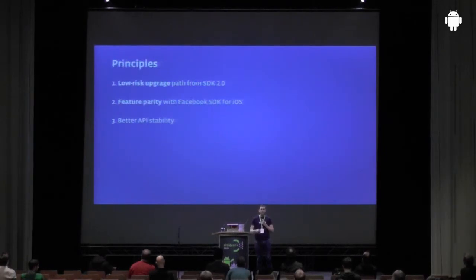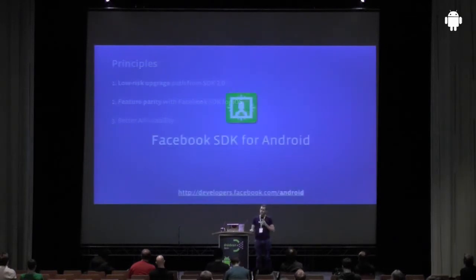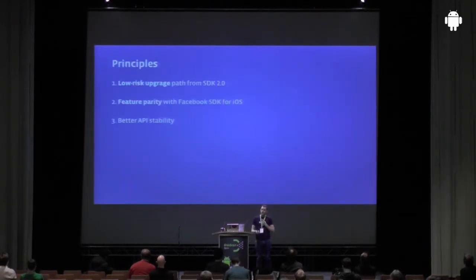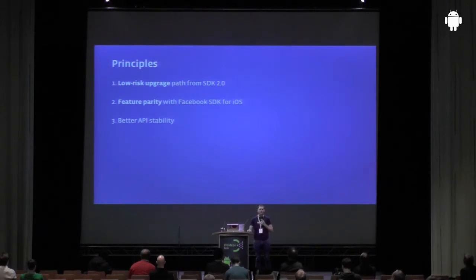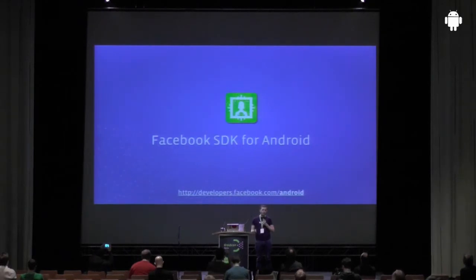They had a couple of key principles they didn't want to move away from. They wanted to make sure the upgrade path was fairly low risk for developers from version 2. They wanted feature parity with the iOS SDK which had been upgraded to version 3. And they wanted to make sure that the stability of the SDK matched the new stability of the APIs, so that you didn't have to do the error handling yourself when something went wrong.